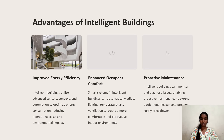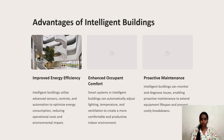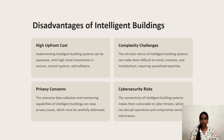Advantages of intelligent buildings include improved energy efficiency, enhanced occupant comfort, and proactive maintenance. Intelligent buildings utilize advanced controls and automation to optimize energy consumption, reducing operational costs and environmental impact. Smart systems automatically adjust lighting, temperature, and ventilation for a comfortable environment. Intelligent buildings can also monitor and diagnose issues, enabling proactive maintenance to extend equipment lifespan and prevent costly breakdowns. Disadvantages include high upfront cost, complexity, privacy concerns, and cybersecurity risks. Thank you.